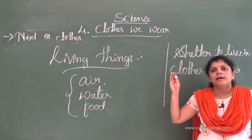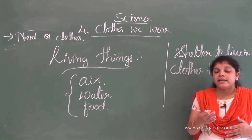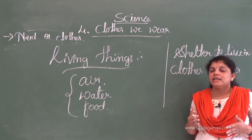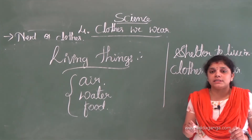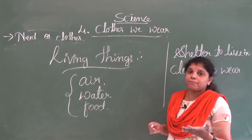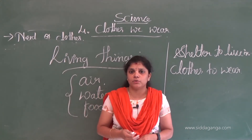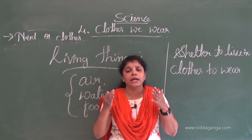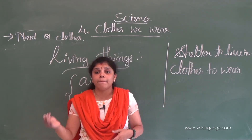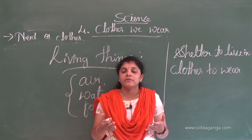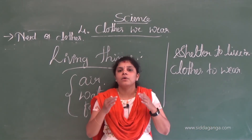Some animals can make their own shelter — for example, birds make nests to lay eggs. Animals cannot wear clothes, but human beings wear clothes. Ancient people lived in caves — that was their shelter. But nowadays we live in houses, buildings, apartments, and villas. We live in different types of houses, whereas early man's shelter was caves.